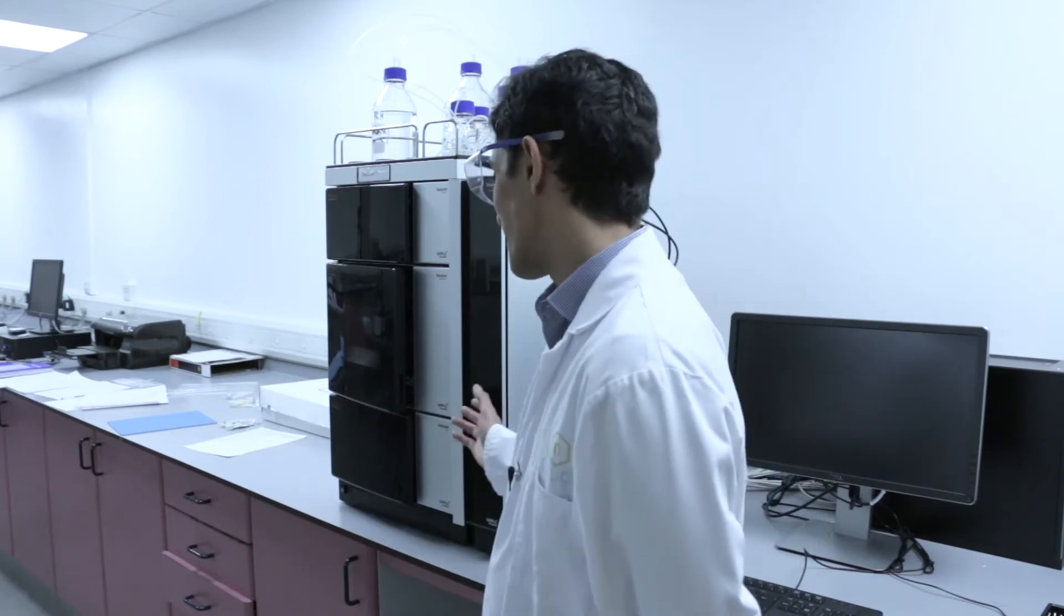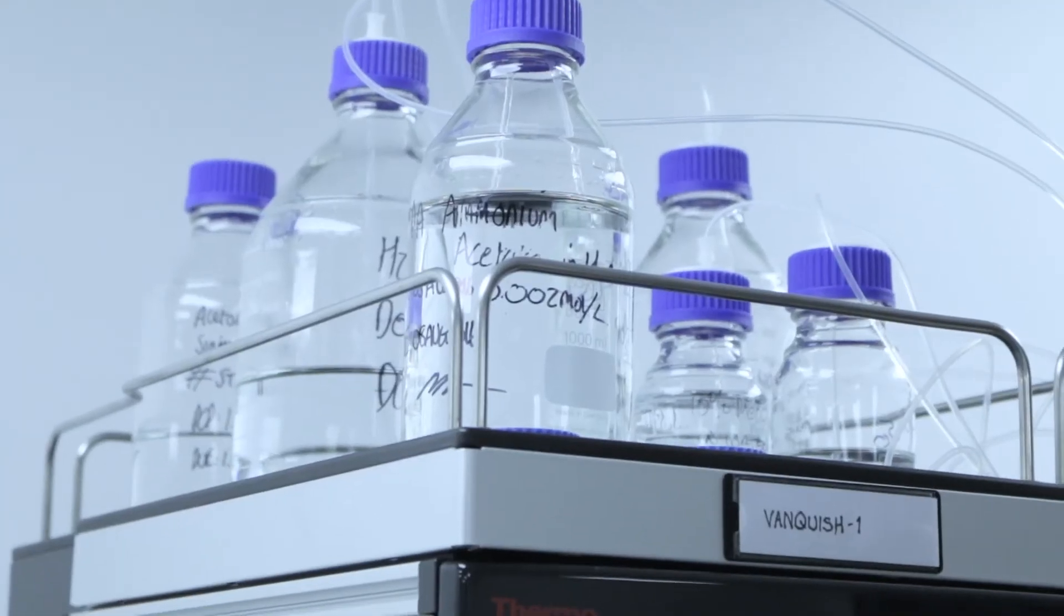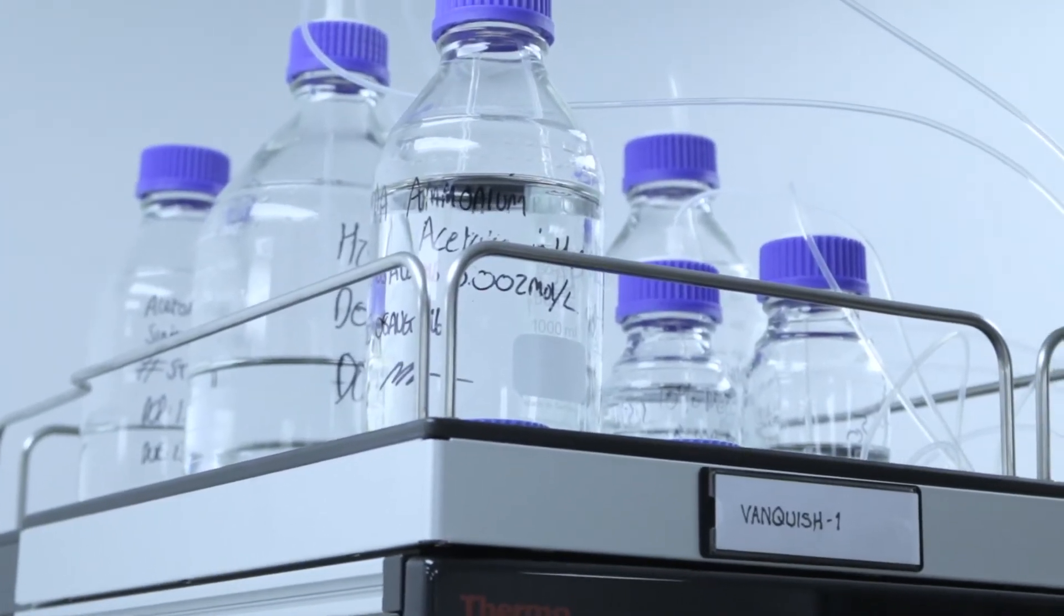This is our UHPLC, that's our ultra high performance liquid chromatography system and we use this to analyse liquid samples that we generated on the vaping machine. We analyse the samples for nicotine content and also for the levels of carbonyls. Through this we can understand the emissions of electronic cigarettes and e-liquids.